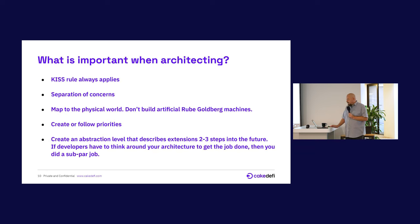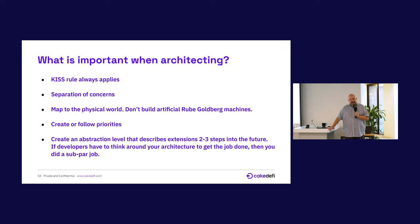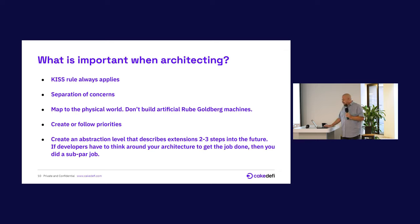What is important when architecting? The KISS rule always applies — keep it simple, stupid. Separation of concerns: the logger shouldn't do any business logic, the network or transport layer of messages shouldn't do any higher-level logic. I was opposed to REST for a long time because we do application error messages in the network layer, which breaks the rules. If you can modularize the system, it will be easier to work with. Try to map what we are doing to the physical world. Don't build artificial Rube Goldberg machines — those contraptions where a ball spirals and hits a pad and something else drops. It's easy to start architecting artificial entities.